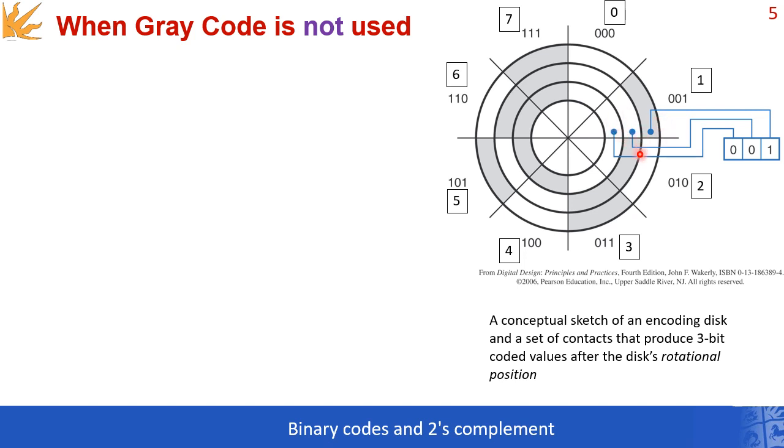Imagine that this disk rotates and each time those three contacts touch parts of the disk. As you can see, the white part of the disk is mapped to a 0-bit. The same applies for the second most important bit. For the least important bit, it's a gray area, so this is mapped to a 1-value.